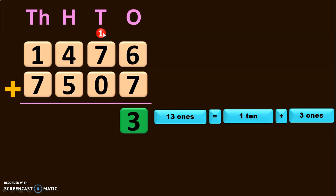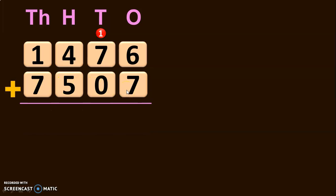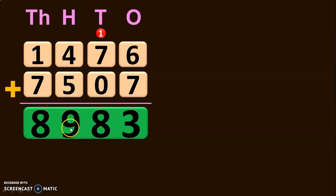Next, start addition in the tens place. 1 plus 7 will give you 8, and 8 plus 0 is again 8. Next, move on to the hundreds place. You have 4 plus 5, which will give you 9. Next, move on to the thousands place. 1 plus 7 will give you 8. So 1,476 plus 7,507 will give you the answer 8,983.